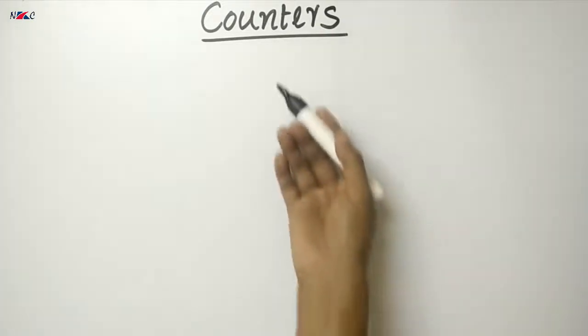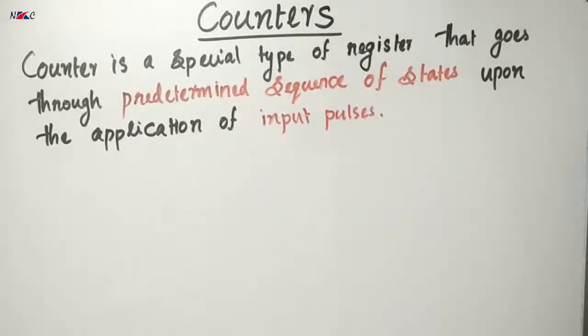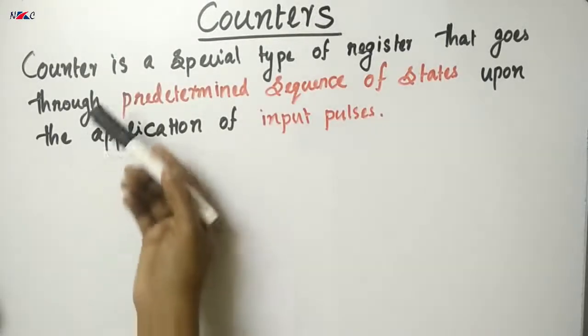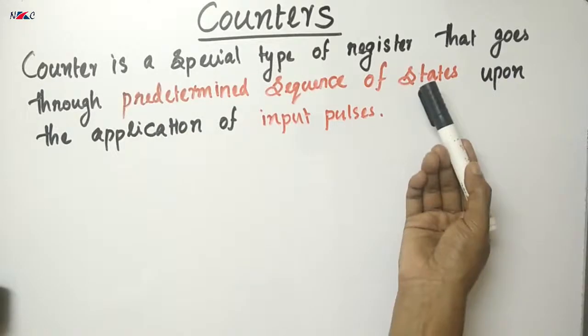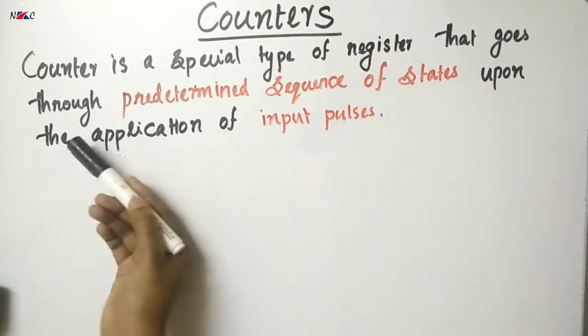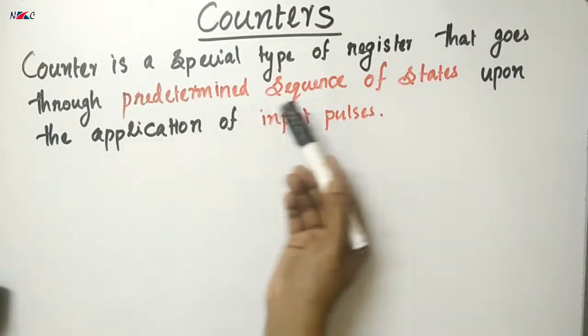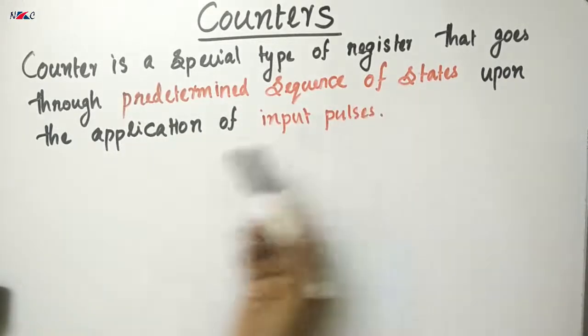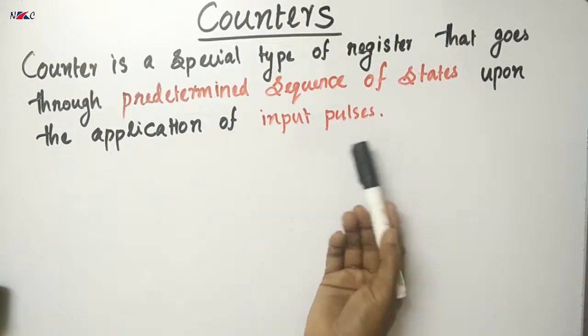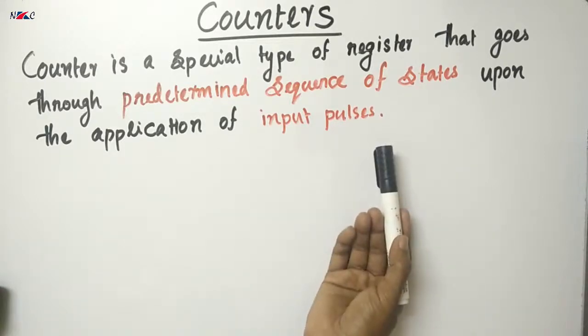Now let's start with the definition of the counter. A counter is a special type of register that goes through a predetermined sequence of states upon the application of input pulses.